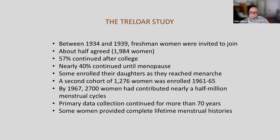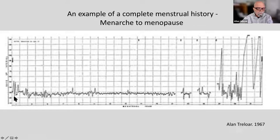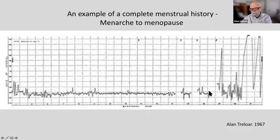Some women provided complete lifetime menstrual histories. So far as I know, this is the only published record of menstrual cycles for one woman's lifetime. It starts when she had her menarche — very irregular cycles at first — then fairly irregular for a number of years, settling out in her middle adulthood with occasional unexpected spikes. Then a pregnancy rather late in her reproductive life, another pregnancy, a third — and after each pregnancy, a lot more variability, ending in her menopause.